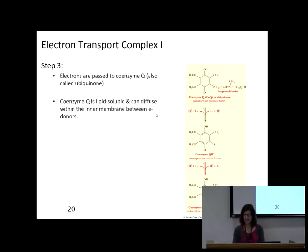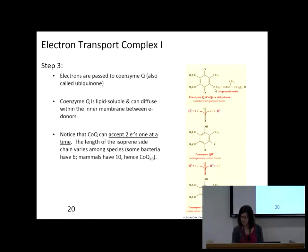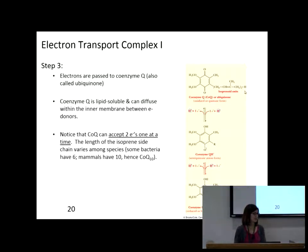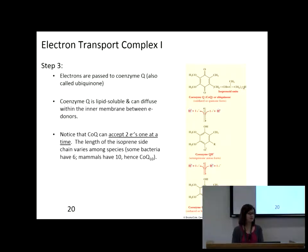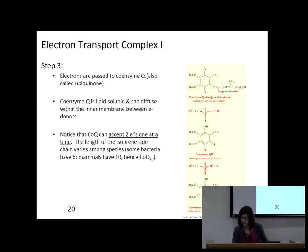The 10 refers to this isoprenoid unit — you can see it has brackets around it and then an N, meaning it repeats. For mammals, it repeats 10 times; bacteria use CoQ6. So it's CoQ10 because the isoprenoid unit repeats 10 times. If it repeats 10 times, that's a very long tail, and that's what makes CoQ10 hydrophobic as it swims along the membrane in that hydrophobic region.